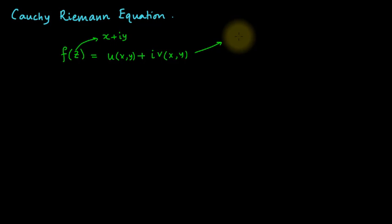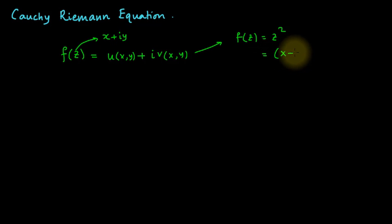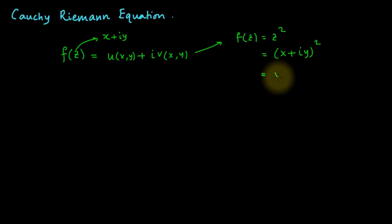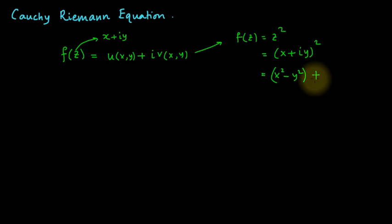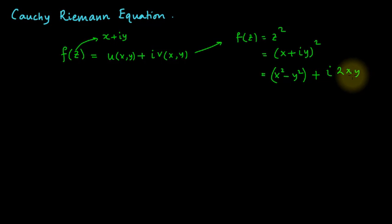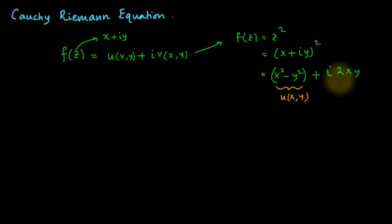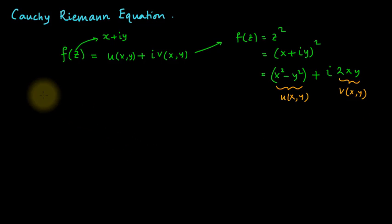For example, let's say f(z) = z². Since z = x + iy, we get (x + iy)² = x² − y² + i·(2xy), using the formula (a+b)² = a² + 2ab + b². So the real part u(x,y) = x² − y² and the imaginary part v(x,y) = 2xy.